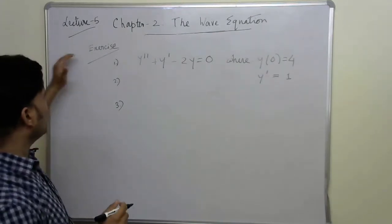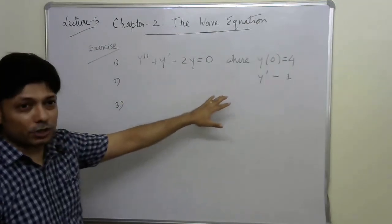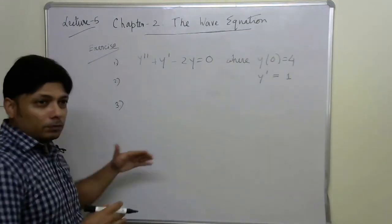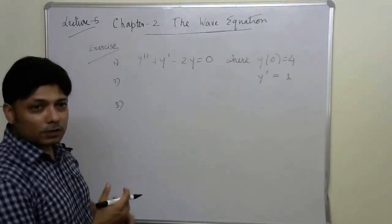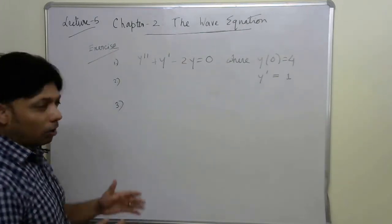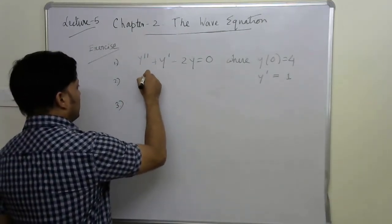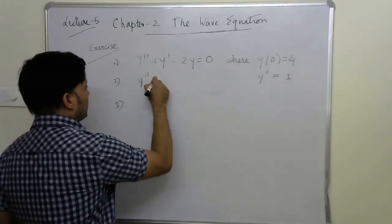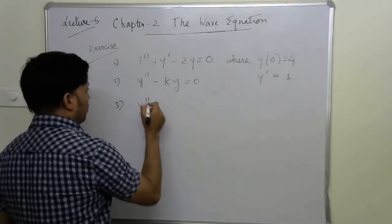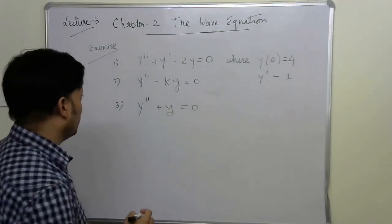Now let's practice: solve y'' + y' - 2y = 0 with the given initial values. Additionally, we need to solve two more important equations: y'' - ky = 0 and y'' + y = 0. These are both second order linear homogeneous ordinary differential equations.